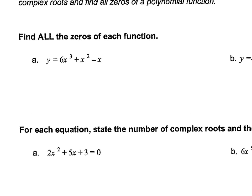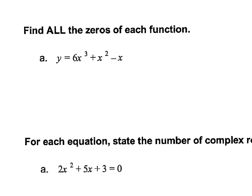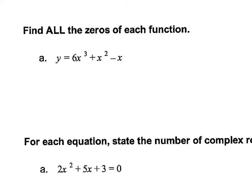So to find all the zeros of this function, what I try to do is I always look at factoring first. So I'm going to factor out an x. Then the second thing I do is check — inside here I have this quadratic, so I'm going to try to factor it. If it doesn't factor, I'm going to use the quadratic formula. So first I'm going to factor by doing grouping.